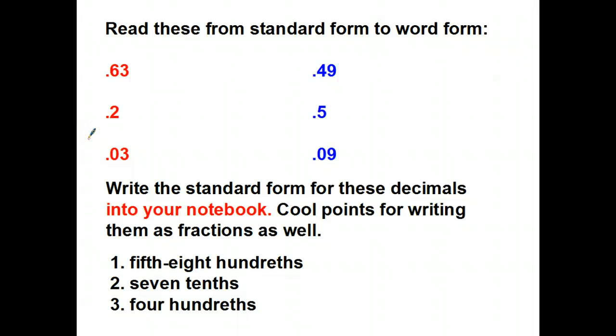Let's look back at the red standard form decimals I've written there because I want to take a second and jot those down in fraction form. So sixty-three hundredths means I have sixty-three out of a hundred. Two tenths means I have two out of ten. And three hundredths means I have three out of a hundred.